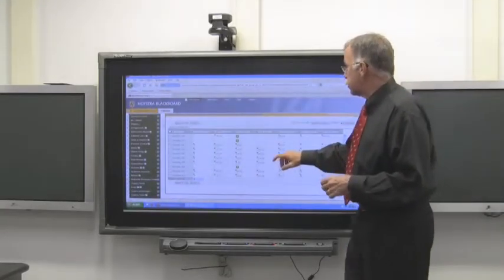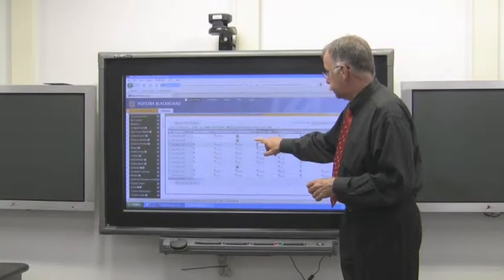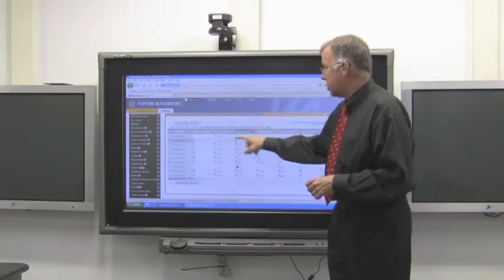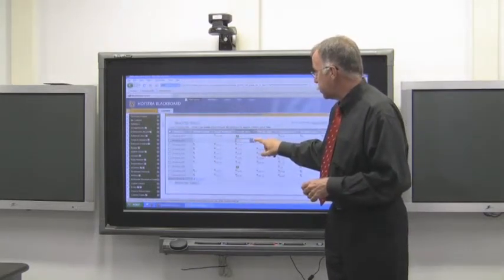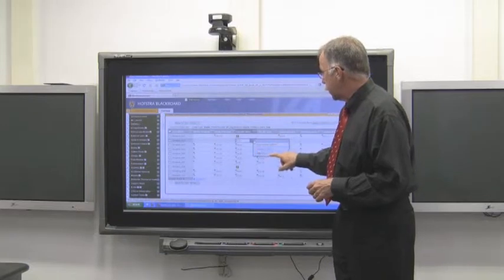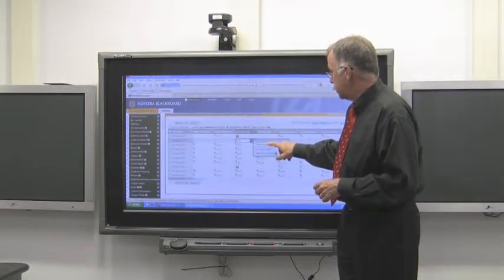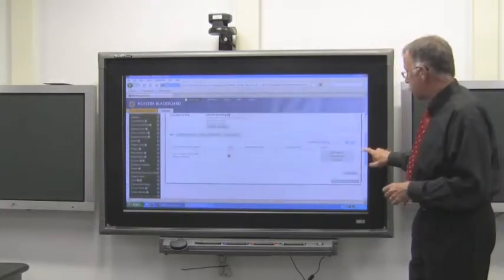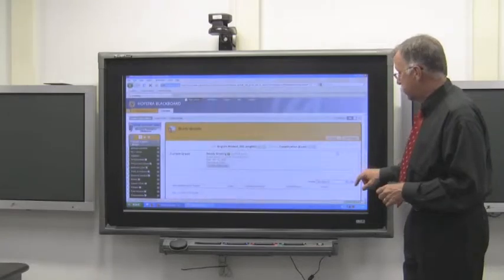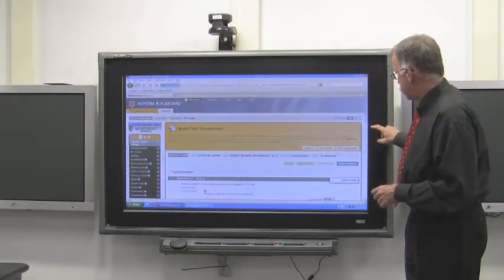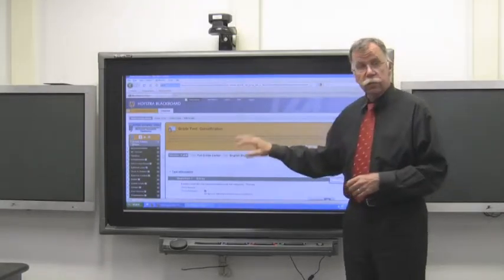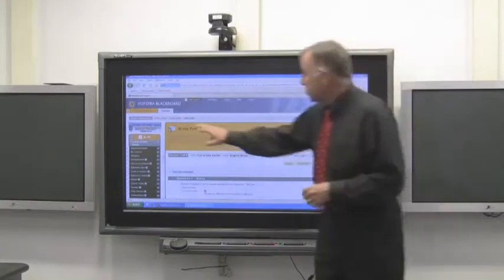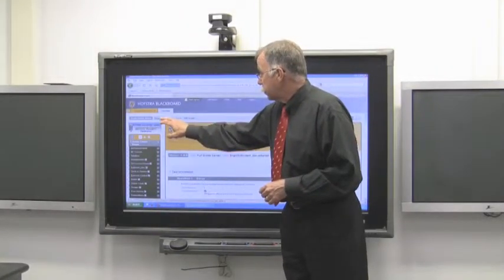If you want to look at a particular student's assignment. When you go into the intersection between the column and this particular student's name, you get a double down arrow for that student. When you click that, you get view grade details. And then over here in the bottom right, you view attempt. And this will take you right into either the particular test for that student or the submission if it's an assignment. We can use these links to go back to the Grade Center.